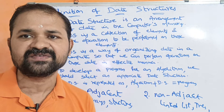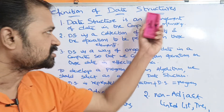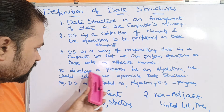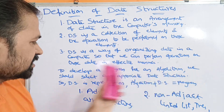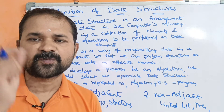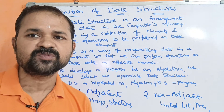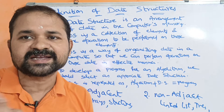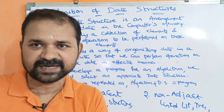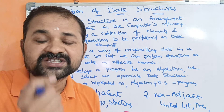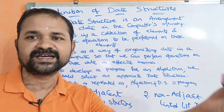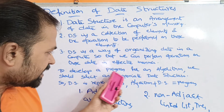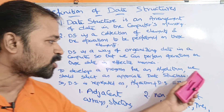Data structure is a way of organizing data. To write a program or algorithm, we should select an appropriate data structure. When we need to solve a problem, we first write an algorithm, then according to the algorithm we write the program. So we need to select the right data structure for our algorithm.